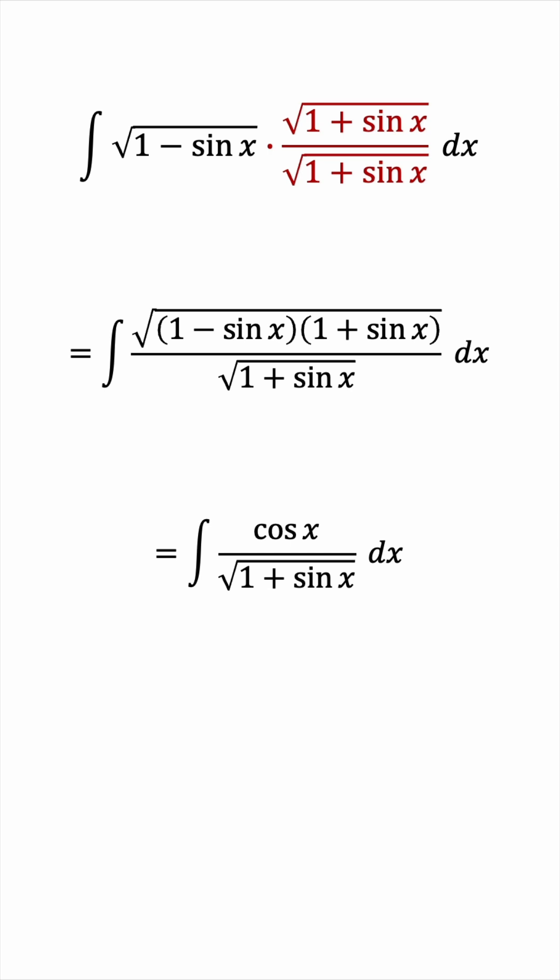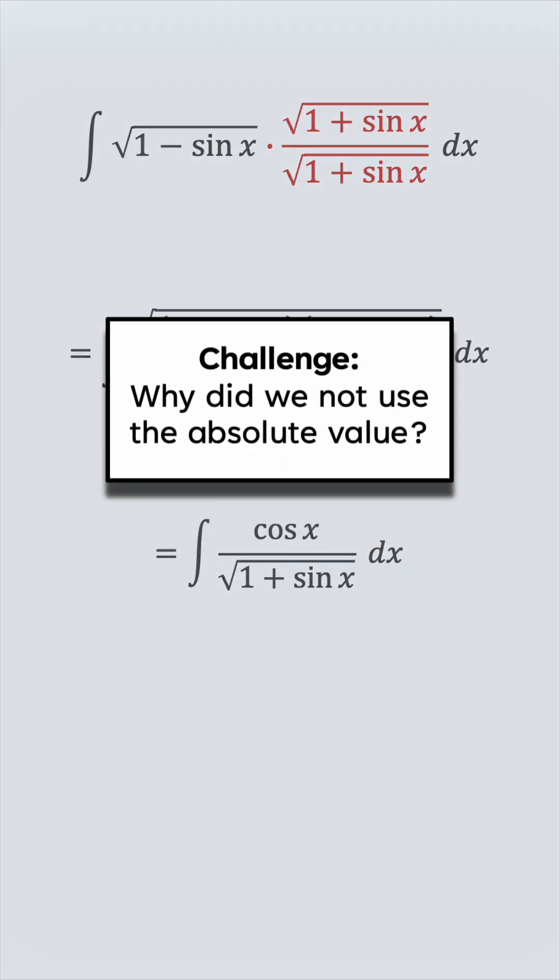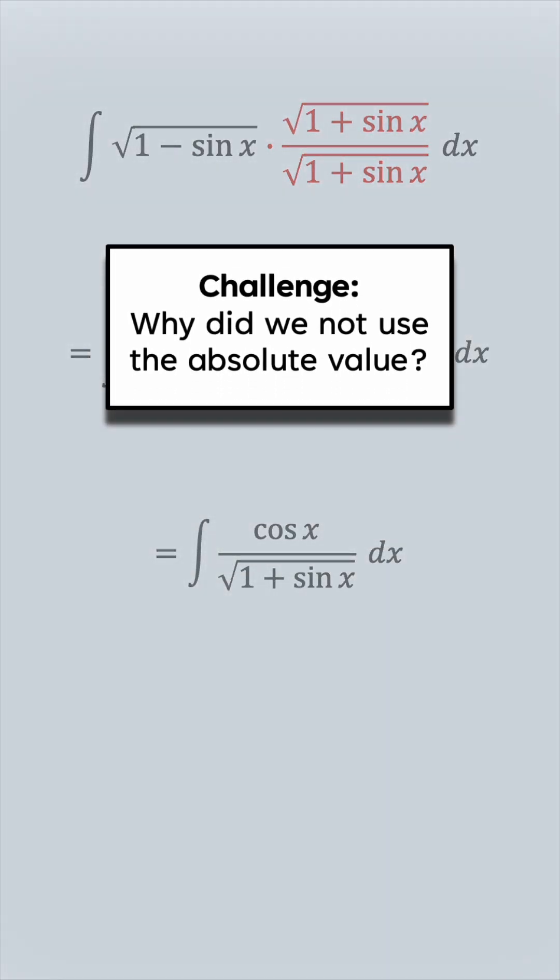And this is where the challenge question comes in. Shouldn't we put the absolute value sign around the cosine x? Why did we not include this absolute value when we cancelled the square root? Let me know what you think.